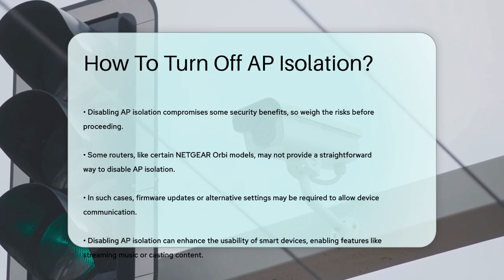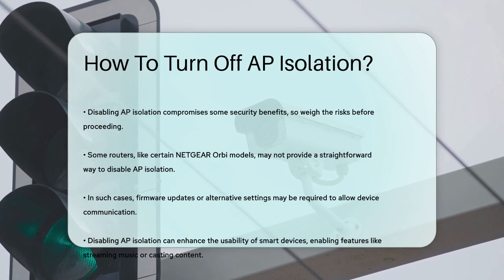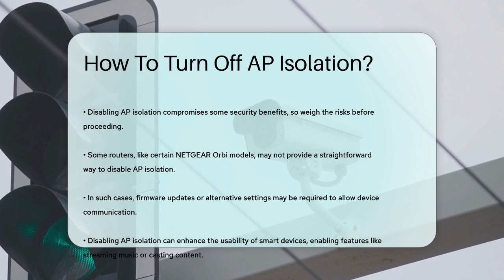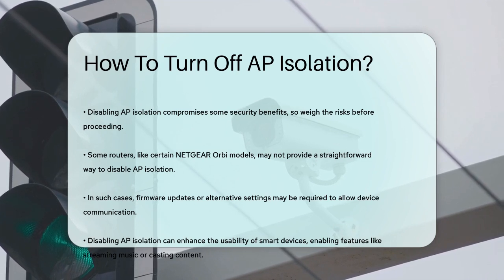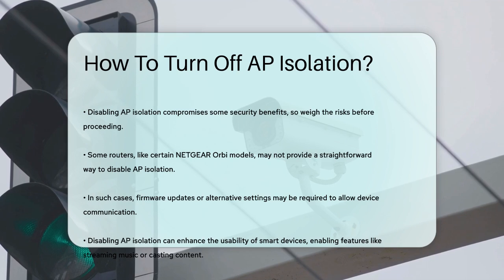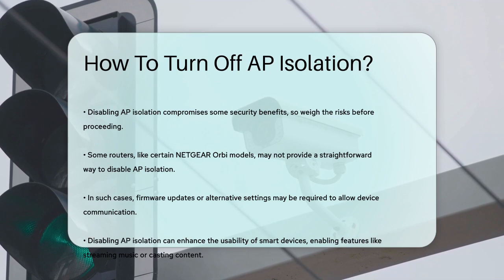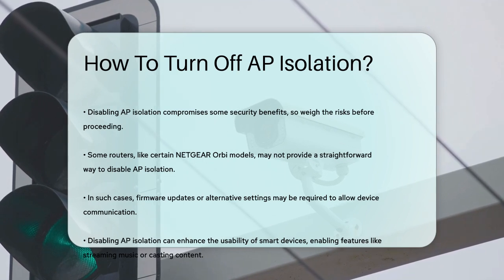By disabling AP isolation, you'll allow your devices to communicate with each other, making it easier to use features like streaming music to Sonos speakers or using Google Chromecast. So if you're having trouble getting your smart devices to work together, this could be the solution you're looking for.